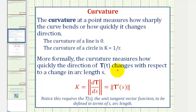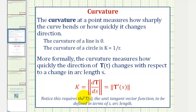More formally, the curvature measures how quickly the direction of the unit tangent changes with respect to a change in arc length s. So we can define curvature k as shown here, but notice how this requires the unit tangent vector to be defined in terms of arc length s, so we won't be using this formula.